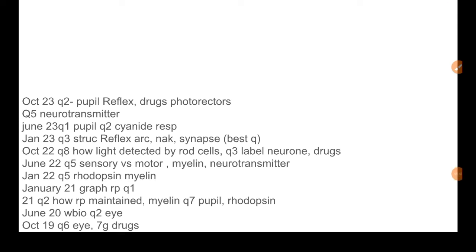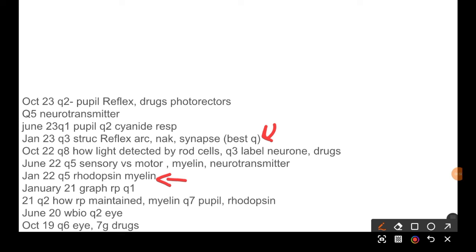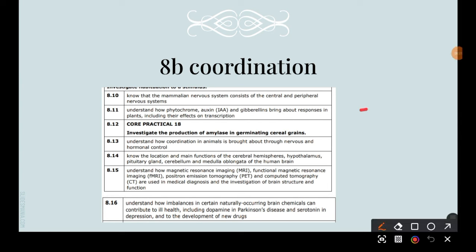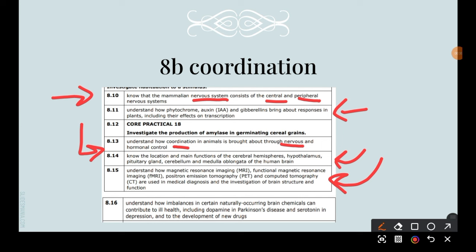Here is a summary of exam questions on these topics. The remaining Unit 5 content covers plant coordination — phytochrome, auxin, and gibberellins — and animal coordination including the nervous system, comparison of nervous and hormonal control, parts of the brain, types of brain scanning with their advantages and disadvantages, and brain diseases caused by chemical imbalances.